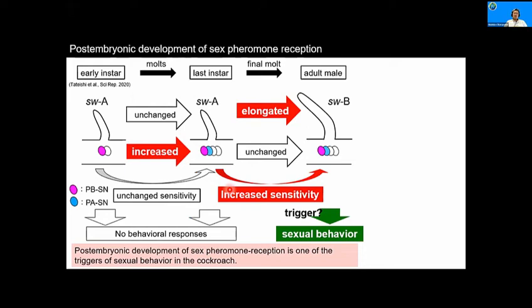Because sex pheromone selectively elicits behavioral response in adult cockroaches, post-embryonic development of sex pheromone reception is one of the triggers of sexual behavior in the cockroach. Thank you.